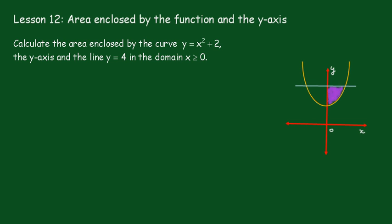Lesson 12: The area enclosed by the function and the y-axis. And this function is the problem. Calculate the area enclosed by the curve y equals x squared plus 2, the y-axis, and the line y equals 4. So this line up here is the line y equals 4.